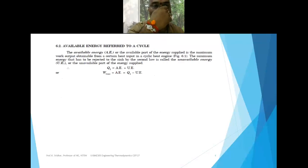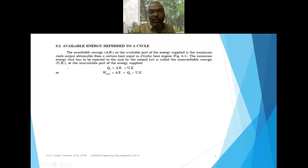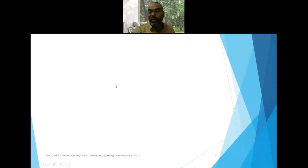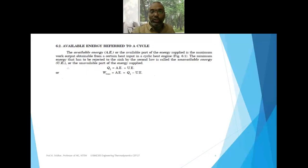Now, how can we find out available energy referred to a cyclic process? Available energy is nothing but the available part of the energy supplied — it is the maximum work output obtainable from a certain heat input in a cyclic heat engine. With Q1 amount of heat input, how much maximum work can we extract from a heat engine — that is the available energy, or availability. The total energy is always equal to available energy plus unavailable energy.